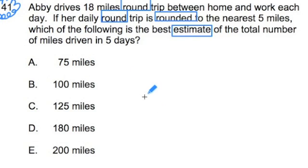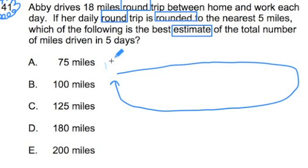So now I might draw a picture to help me out. I see that she does this trip, a round trip, so I'll draw a big round circle and it gets 18 miles. And it says that if you rounded it, her daily round trip to the nearest fifth mile, right?